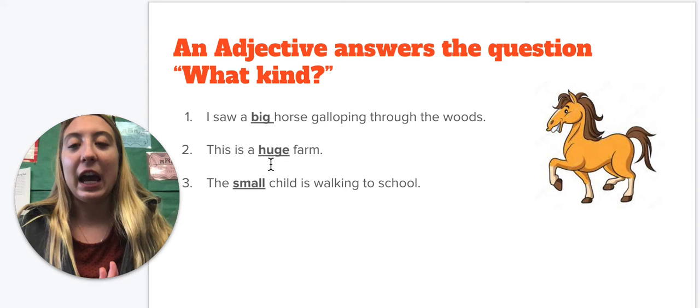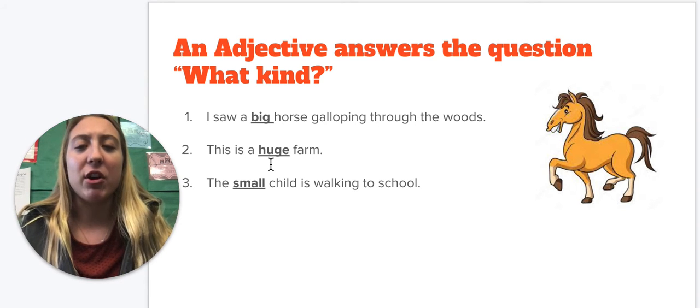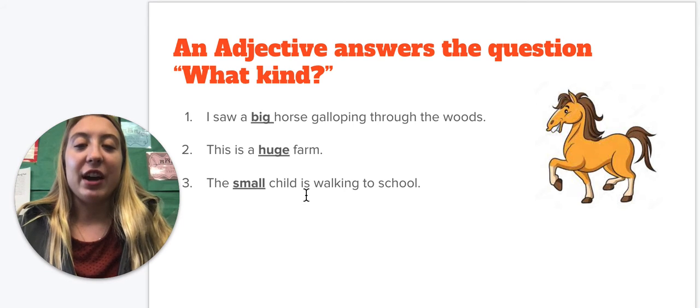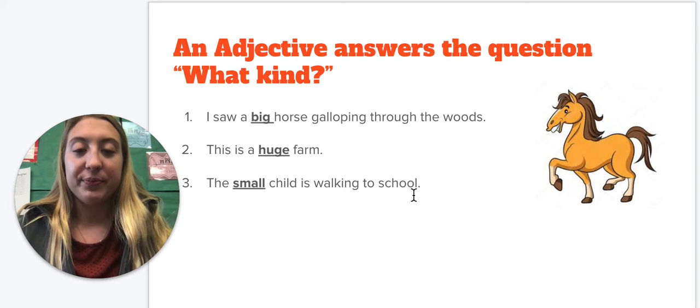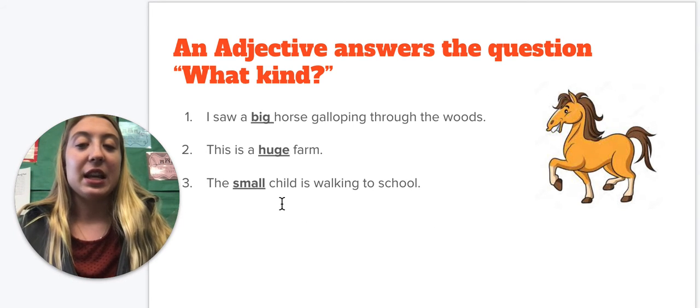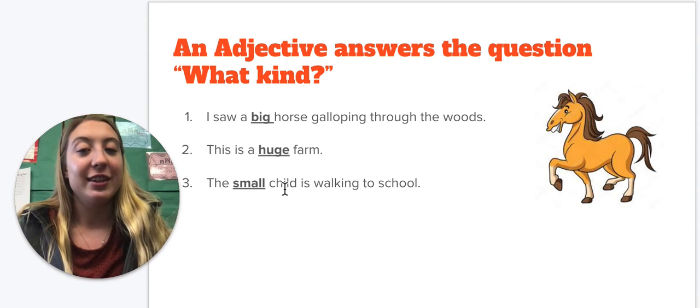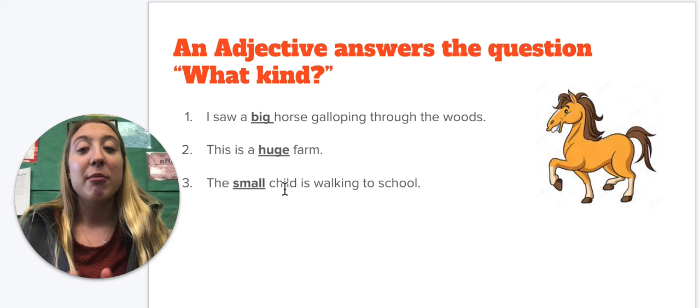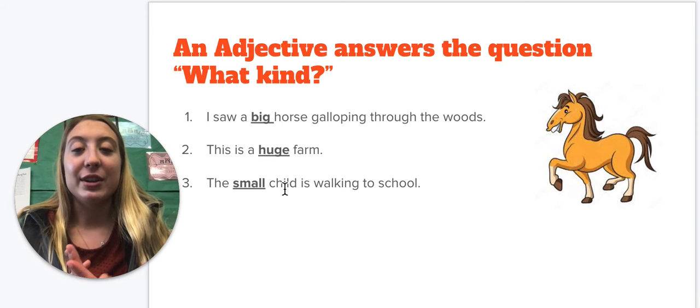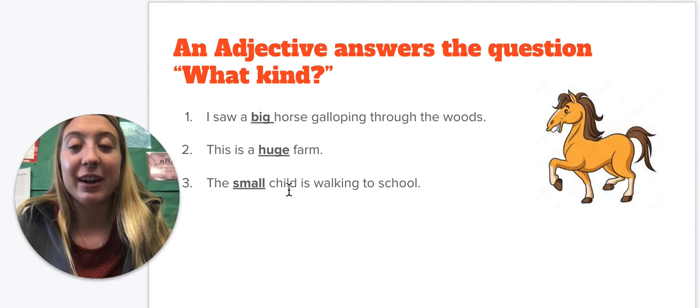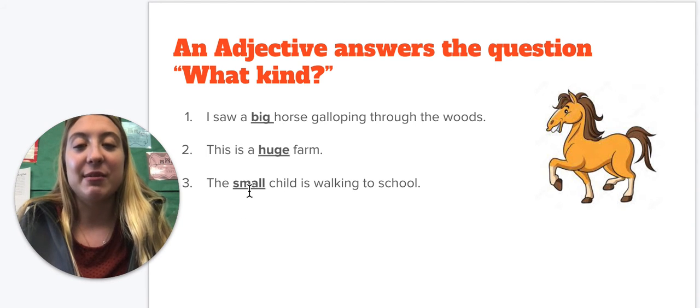So my adjective is describing the noun. It's saying, what kind of noun is this? What kind of farm is this? It's huge. The small child is walking to school. This sentence is about a child, but what kind of child? It's about a small child. So now we're describing what kind of noun. We have a noun child, and we're saying what kind of child gives us small.